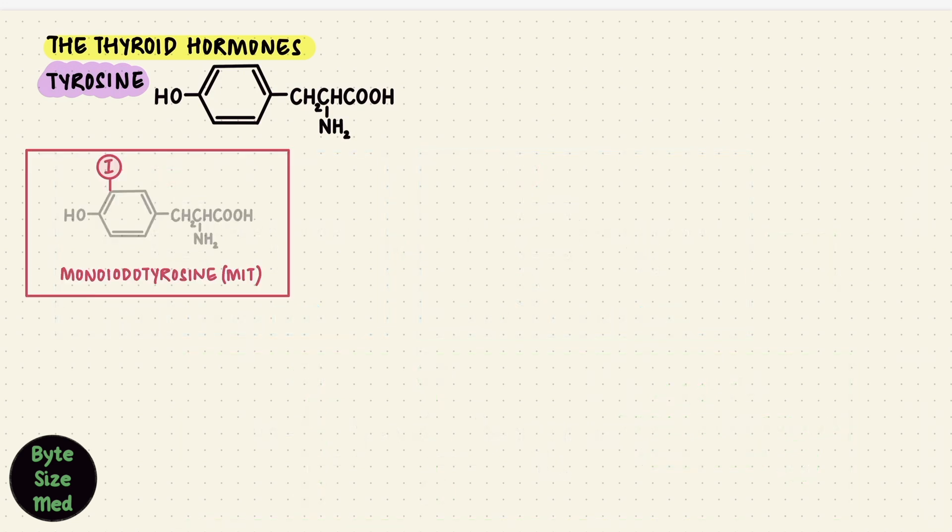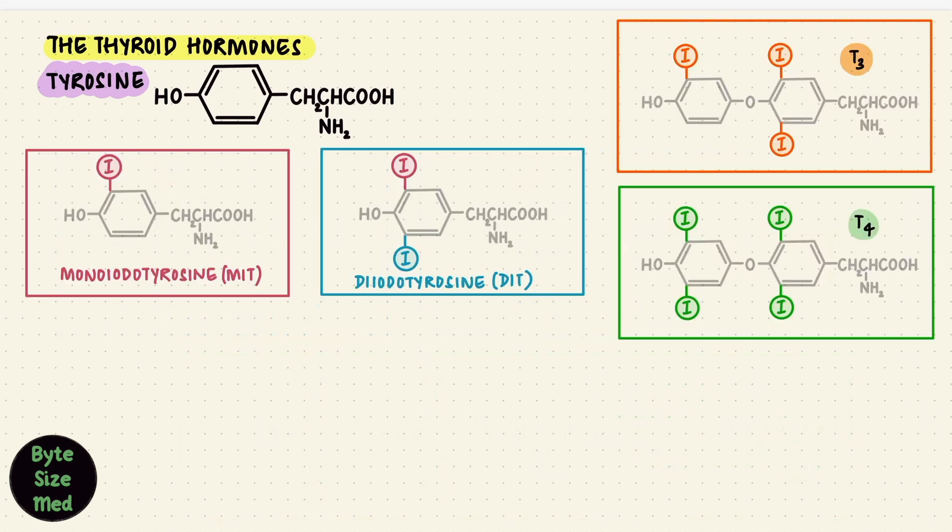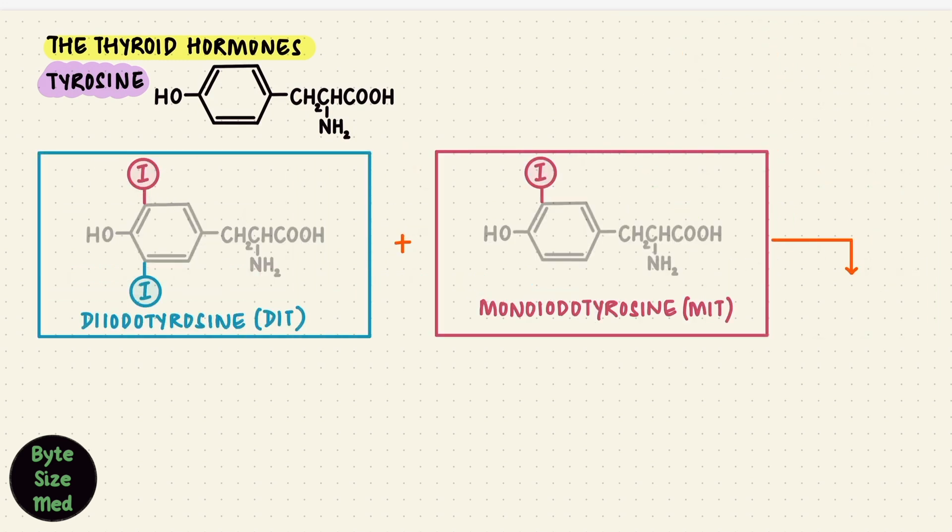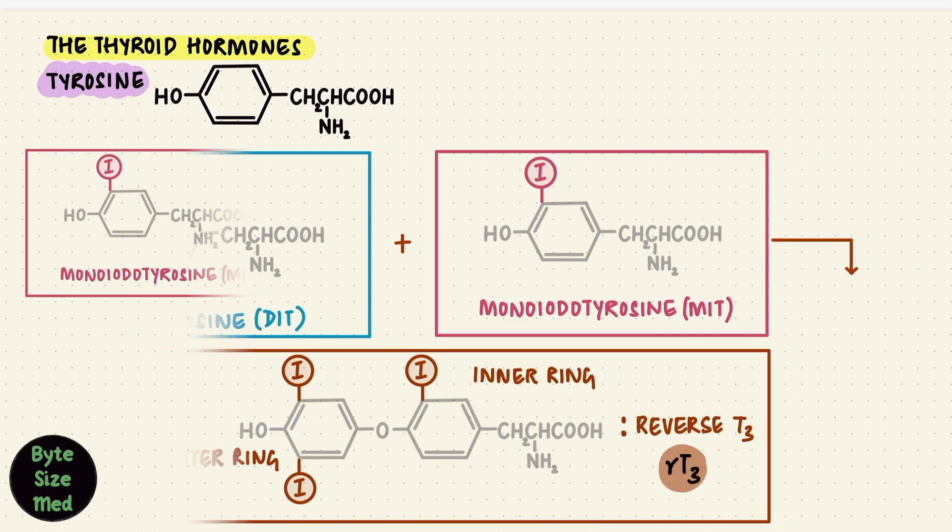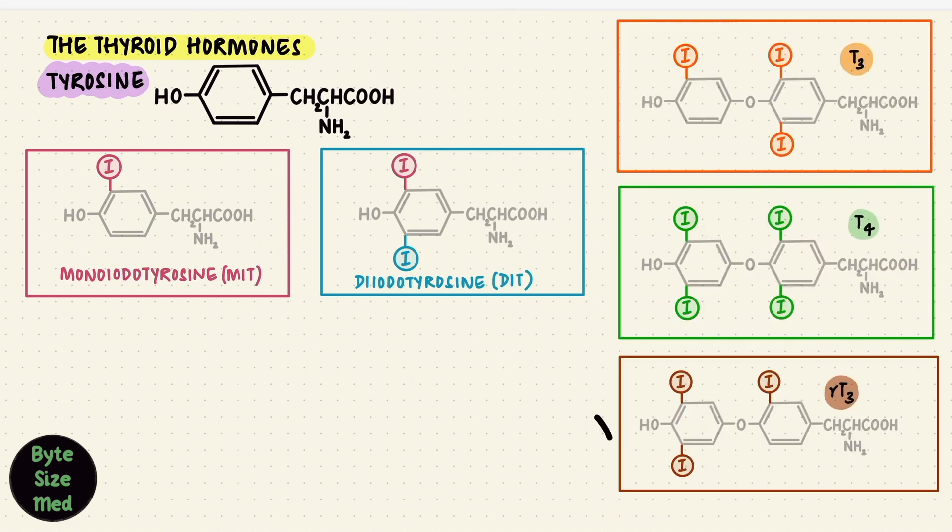So we have MIT, DIT, T3, and T4. There's one more that I'm going to add here. Instead of the inner ring, if it's the outer ring of T3 that has two iodine, that is called reverse T3. And reverse T3 hasn't got any functions in the body. MIT and DIT are not physiologically active either. T3 is active, and T4 gets activated to T3 in the periphery. I'll get to that, but it's mainly this T3 that has physiological actions in the body. Those are important thyroid hormones, and now we'll see how the thyroid gland synthesizes them. I've broken it down into 10 steps.